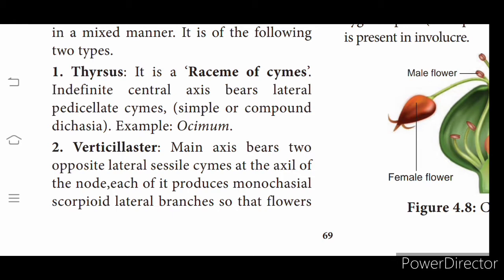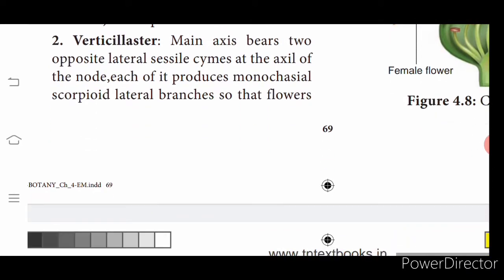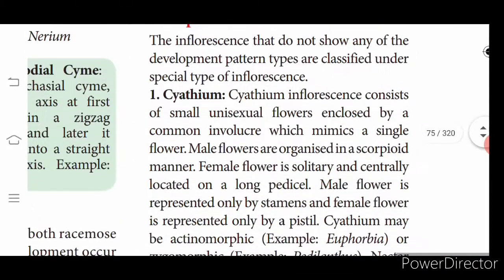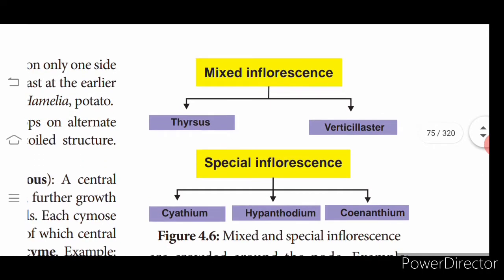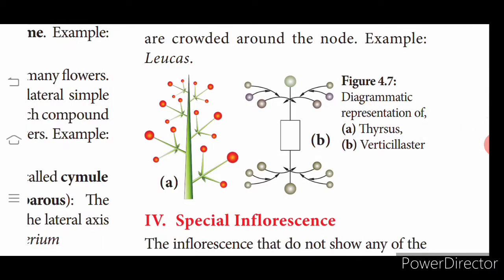Mixed inflorescence, as the name indicates, is a mixture of racimose and cymose patterns. It occurs in a mixed manner and is of two types. Thrysis: racimose and cymose inflorescence — indefinite central axis with lateral pedicellate cymes; example is Ocimum. Verticillaster: main axis bears opposite lateral sessile cymes. Each node produces monocasial scorpioid lateral branches. Thrysis and verticillaster are shown diagrammatically.